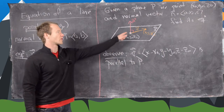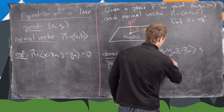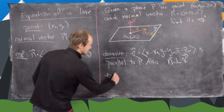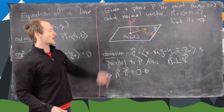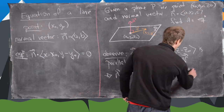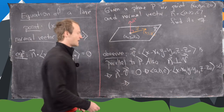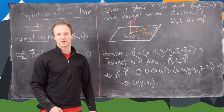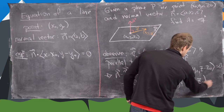Since we know n is orthogonal to the plane, that means n has to be orthogonal to v as well. So n dot v equals 0. Using the components of n and v, that gives us a, b, c dot (x minus x-naught, y minus y-naught, z minus z-naught) equals 0. In other words, the scalar equation of the plane is a(x minus x-naught) plus b(y minus y-naught) plus c(z minus z-naught) equals 0.